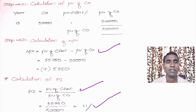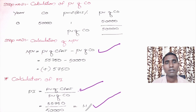That's all for today. We have learnt the profitability index method — the concept, formulae, decision criteria, and a problem. We will be coming up with the next lecture soon. Till then, good day. Goodbye.